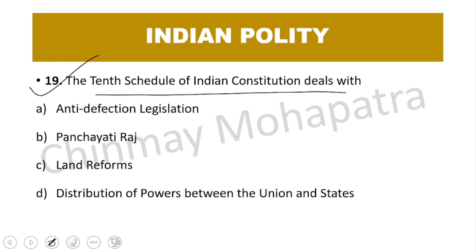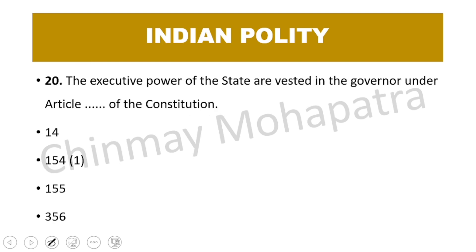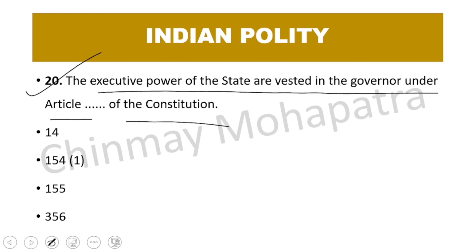Question 19: The 10th Schedule of the Indian constitution deals with the right answer — anti-defection legislation. Question 20: The executive power of a state is vested in the governor under which article of the constitution? The right answer is Article 154(1).